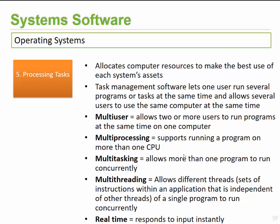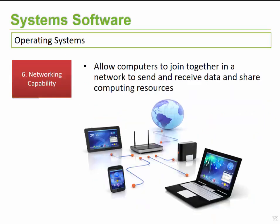A few related concepts: multi-user is where two or more users run computers at the same time to share resources. Multiprocessing is where a program can be run on multiple CPUs. Multitasking is where more than one program can be run at the same time, with the processor giving equal time slots to each open program. Multi-threading allows different threads or sets of instructions to run independently within a single program. Real-time processing relates to immediate responses to processing requests.